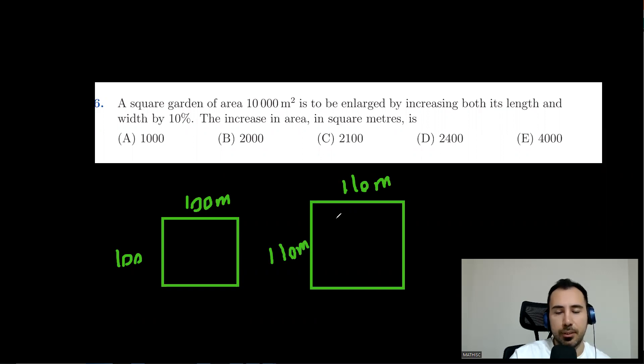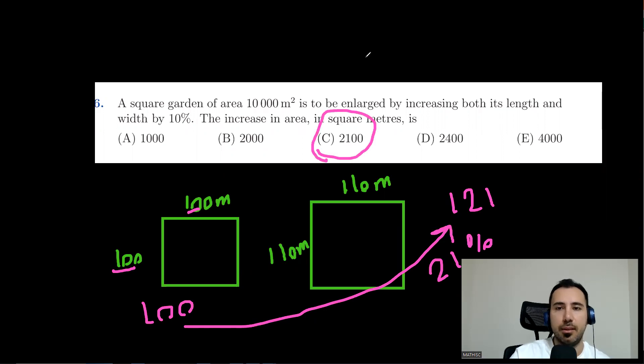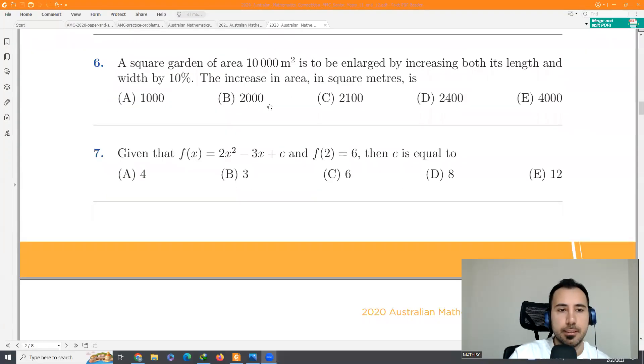I'm not going to do it fully. We know that 11 times 11 is 121. But 10 times 10 is 100. What is the increase in percentages? 21%. Now we could even see that in the answer the only one representing 21% of 10,000 is the one starting with 21.